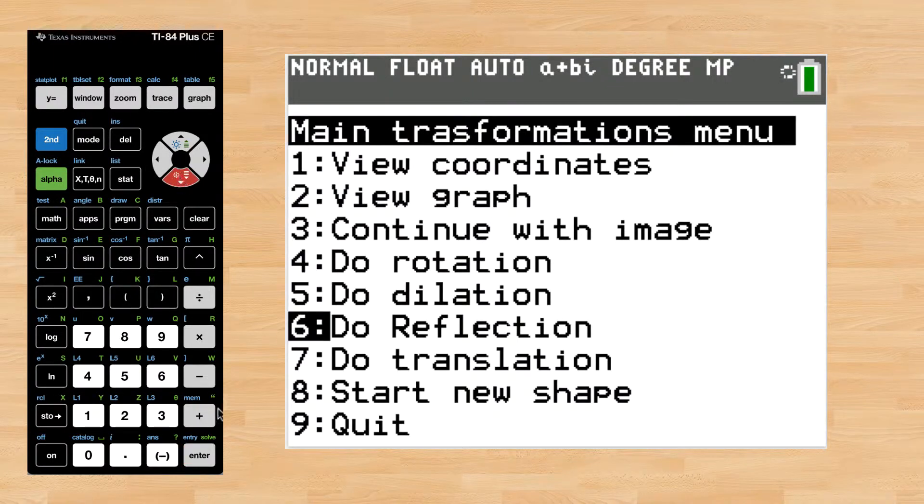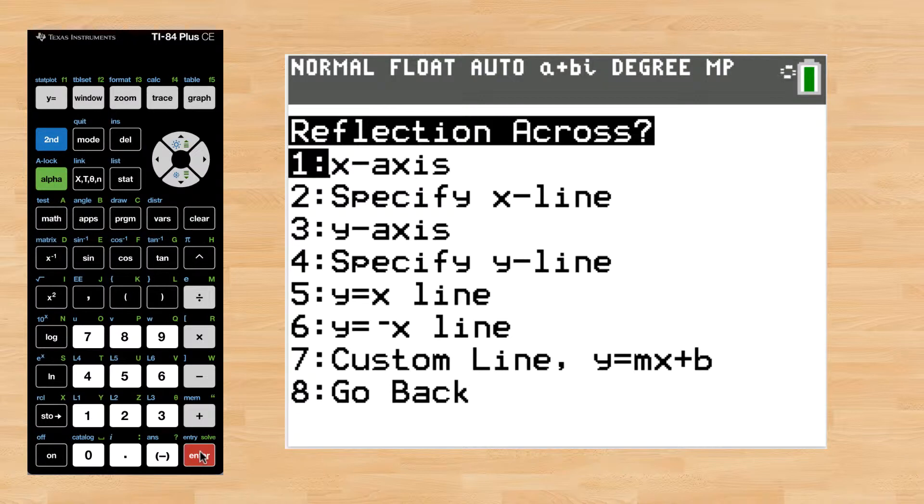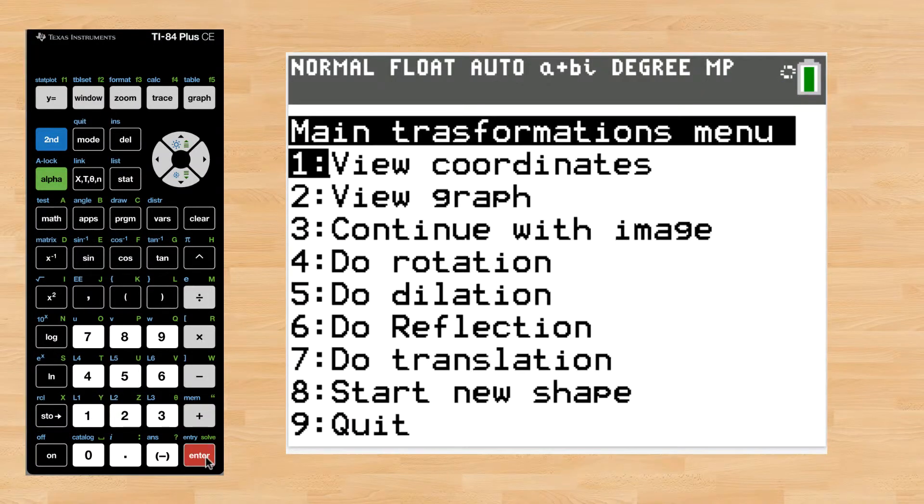To do a reflection, choose number 6, and you'll see you can specify any line you want as the line of reflection. Here's what it looks like if we reflect across the y-axis.